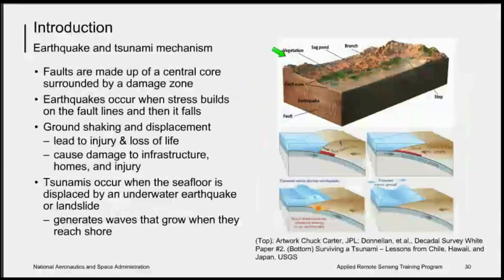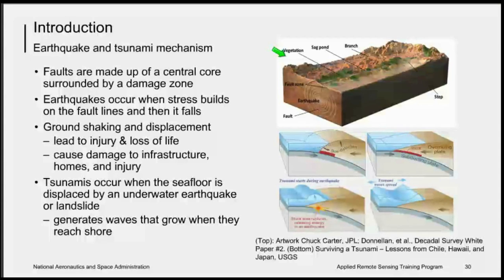The mechanisms for earthquakes and tsunamis involve faults both on land and underwater. Faults on land are made up of a central core surrounded by damaged zones. Earthquakes occur when stress builds up on these faults and then it fails. Ground shaking and displacement lead to injury and loss of life, and they cause damage to infrastructure and homes. Tsunamis occur when the seafloor is displaced by an underwater earthquake or landslide, generating waves that grow when they reach the shore and can grow to very great heights, running up very far inland.